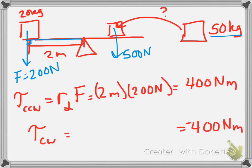Because we have 50 kilograms multiplied by 10 meters per second squared. Again, that's gravity. So we have 500 sitting right here, and we need to know what this R value is.